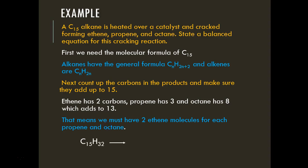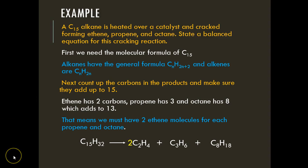Since the alkane has 15 carbons, its formula is C₁₅H₃₂. We write the products—ethene, propene, and octane—placing a coefficient of 2 in front of ethene to show two moles are produced. That gives us our balanced equation.